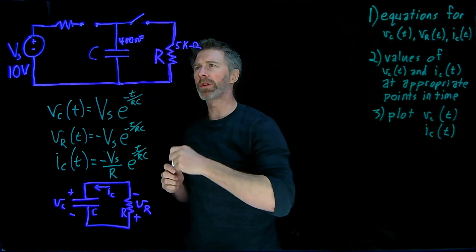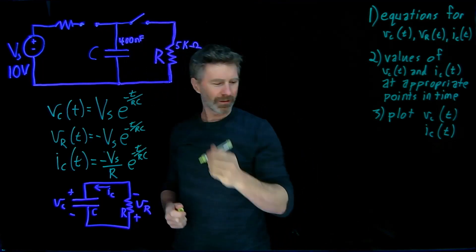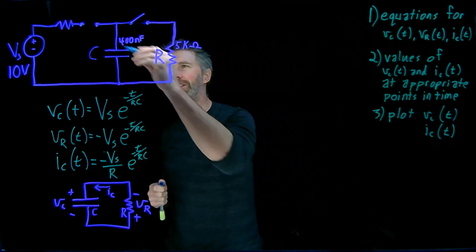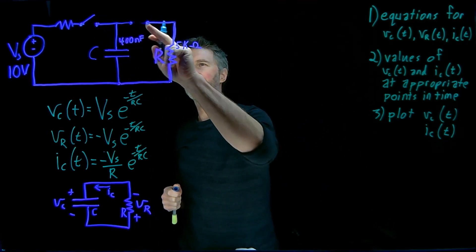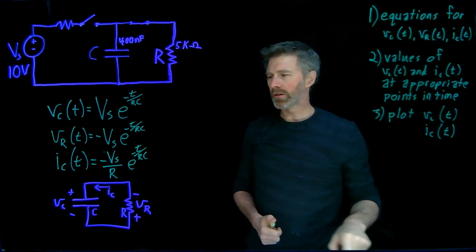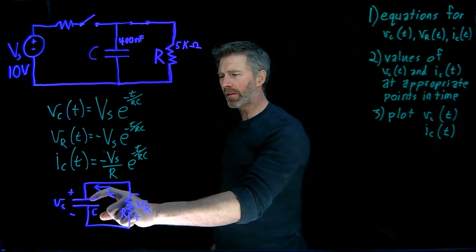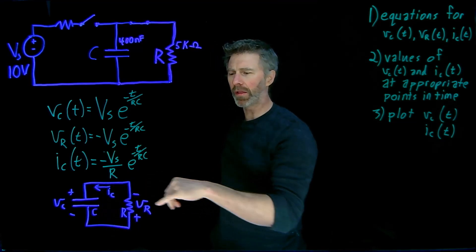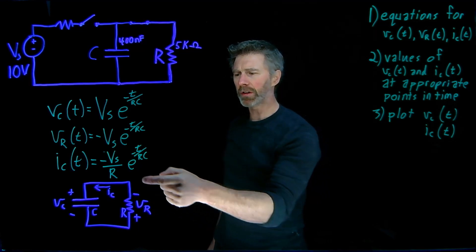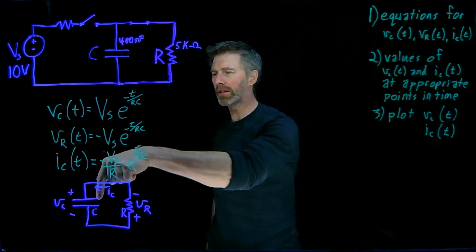Then this switch opens up and this switch closes. What we're left with is this circuit here — a discharging capacitor circuit, where the voltage across the capacitor is defined as positive at the top and negative at the bottom. The voltage across the resistor is defined as positive at the bottom, negative at the top, because the current is defined as flowing into the positive terminal of the capacitor, so going in this direction.